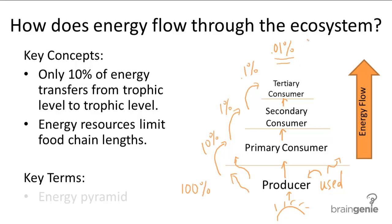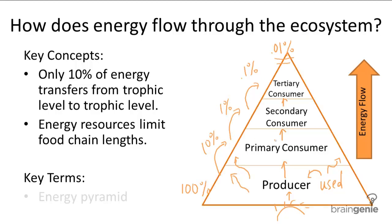So that's why it generally doesn't exist. This shrinking energy from trophic level to trophic level is usually represented in a pyramid, and this is called the energy pyramid. Organisms in higher trophic levels compensate for the inefficient energy transfer by consuming more.